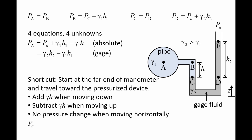So let's start at point E, where the pressure is the ambient pressure. As we travel downward from point E to point D, we add gamma 2 H2. Then we jump across horizontally from point D to point C, which is allowed since both points are in contact with the gauge fluid, and the pressure does not change because they are at the same elevation. Next, we travel upward from point C to point B, so we must subtract gamma 1 times H1. And finally, there is no pressure change as we move horizontally from point B to point A.